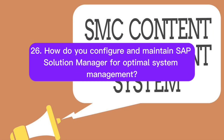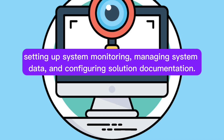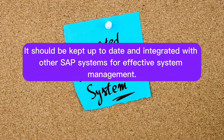Question 26: How do you configure and maintain SAP Solution Manager for optimal system management? Configuring SAP Solution Manager involves setting up system monitoring, managing system data, and configuring solution documentation. It should be kept up to date and integrated with other SAP systems for effective system management.